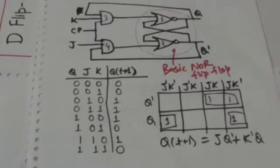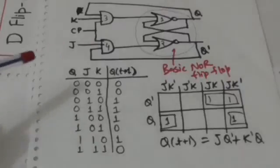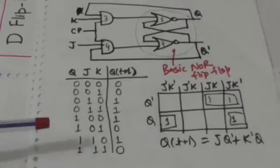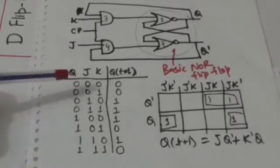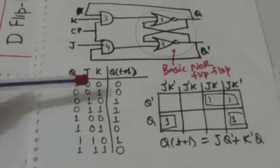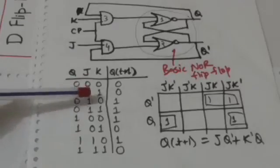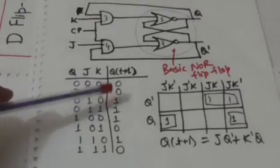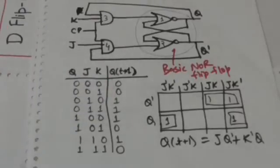Similarly, when Q-not equals 1 — that is, Q equals 0 — and J and clock pulse are equal to 1, so when Q equals 0 and J equals 1, the flip-flop will switch to set state. It means the next state will be 1.